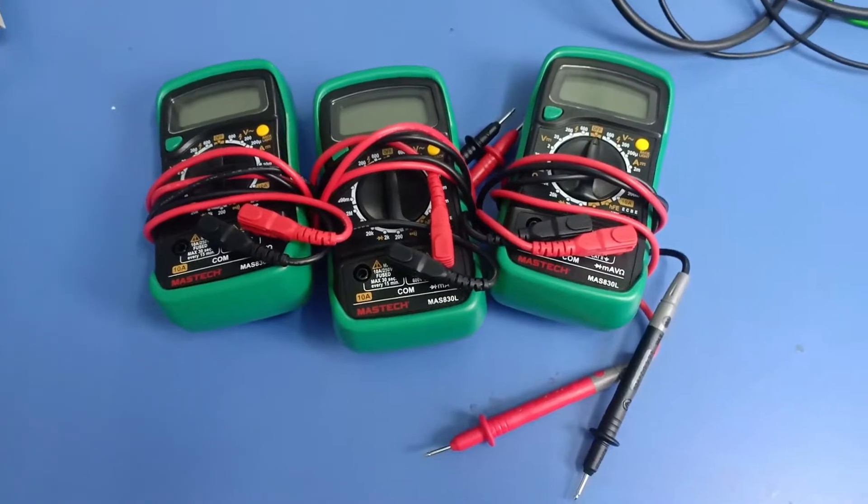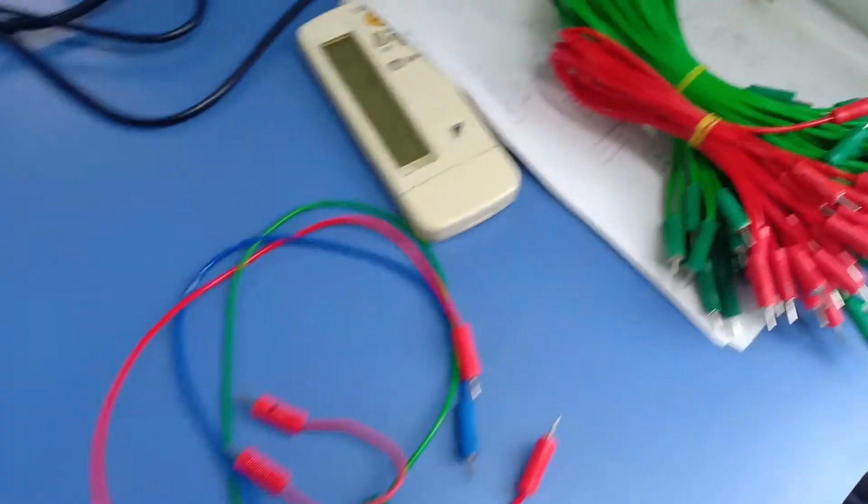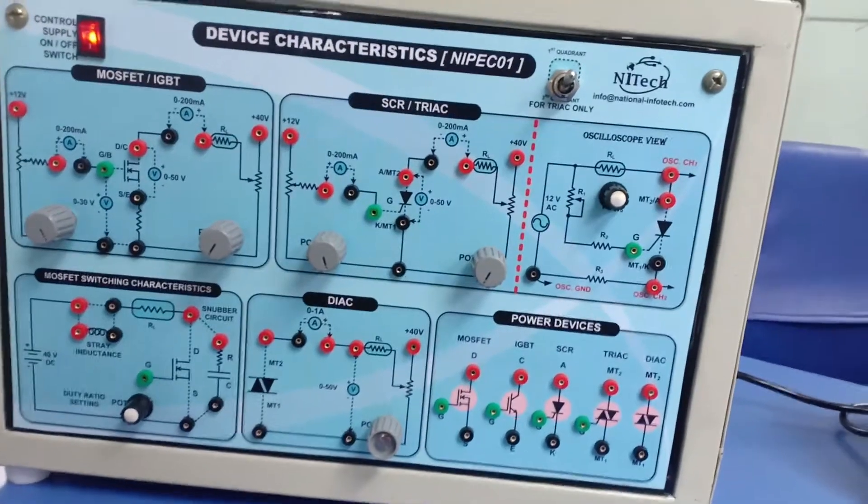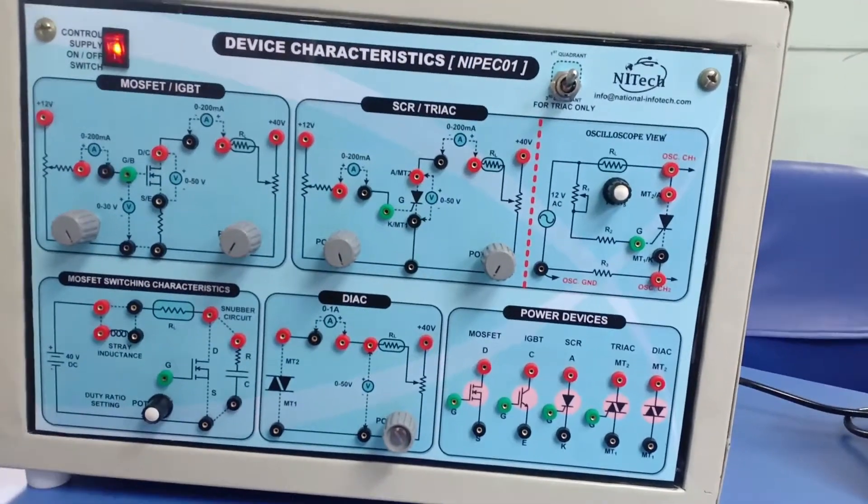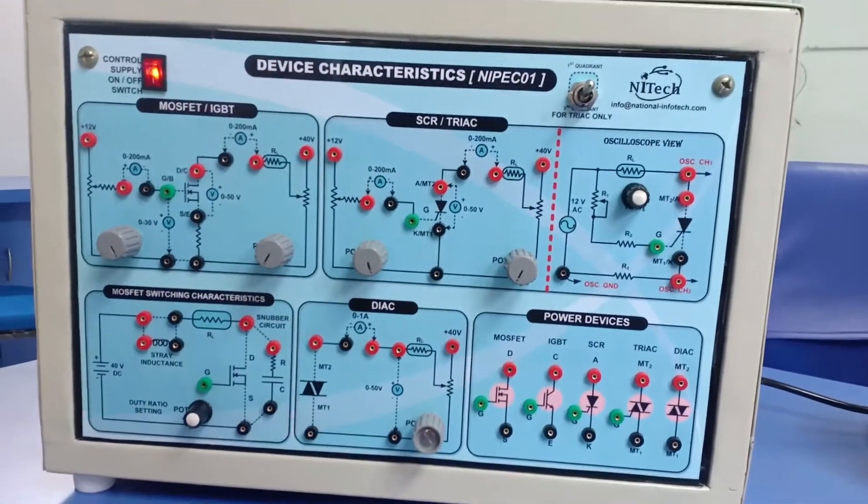We are also getting these three multimeters with this kit and some connecting wires as well, so we can easily see the different device characteristics by using these three multimeters and some connecting wires.